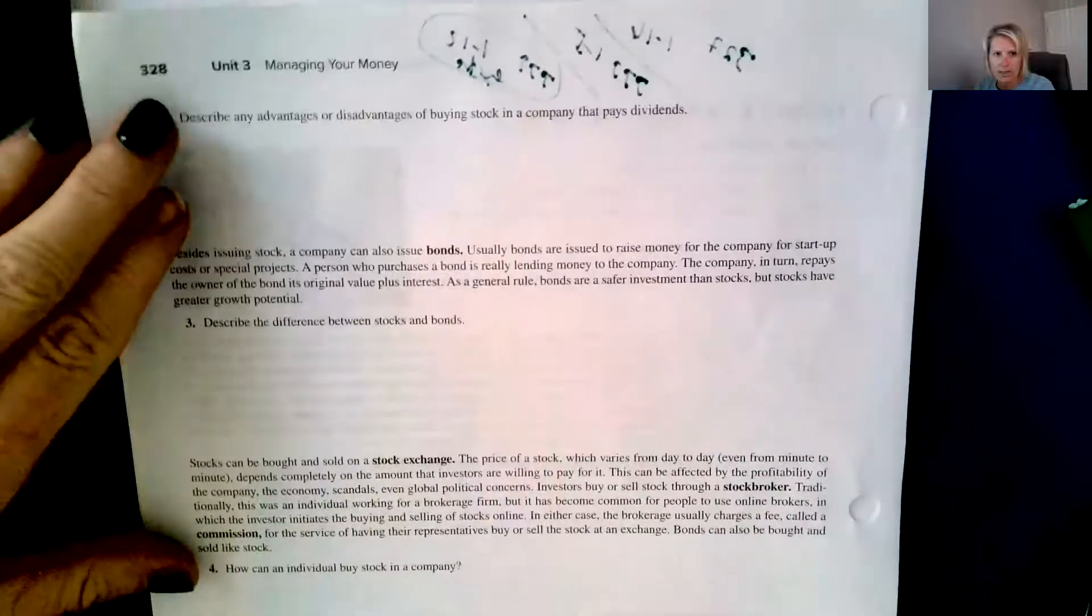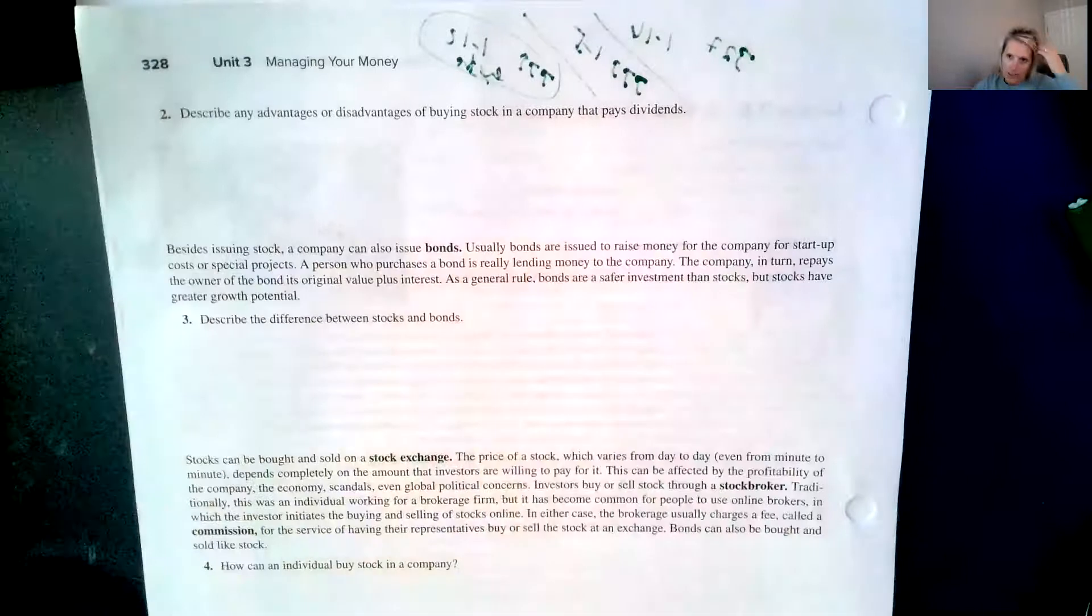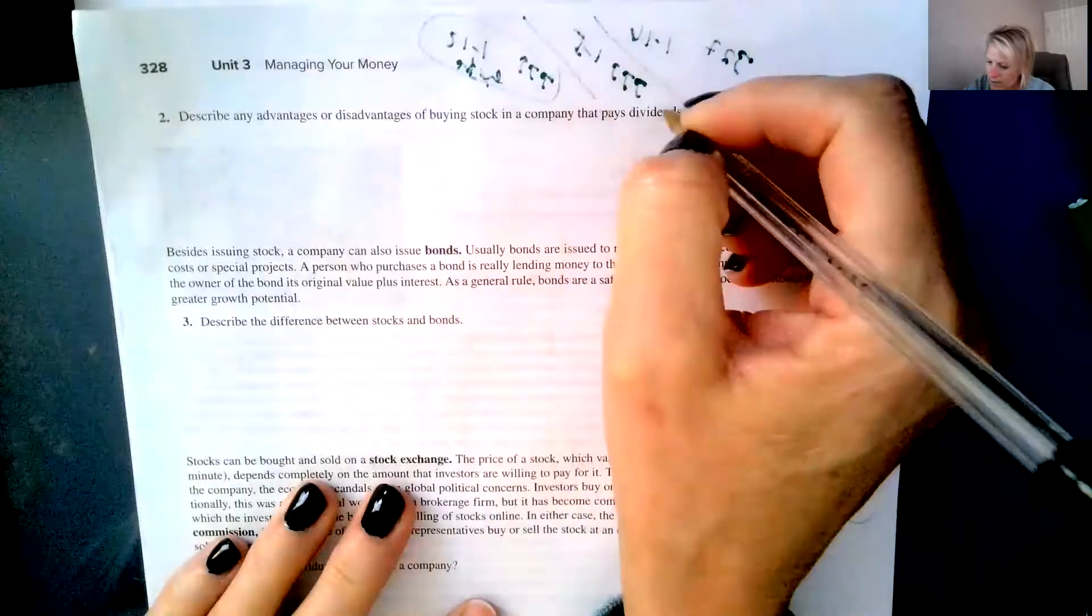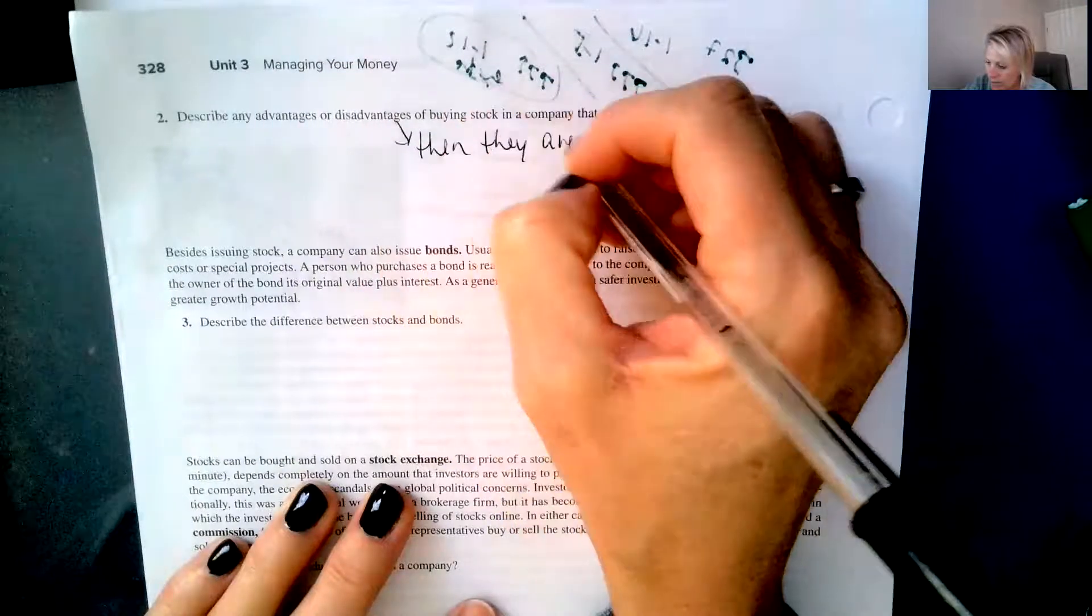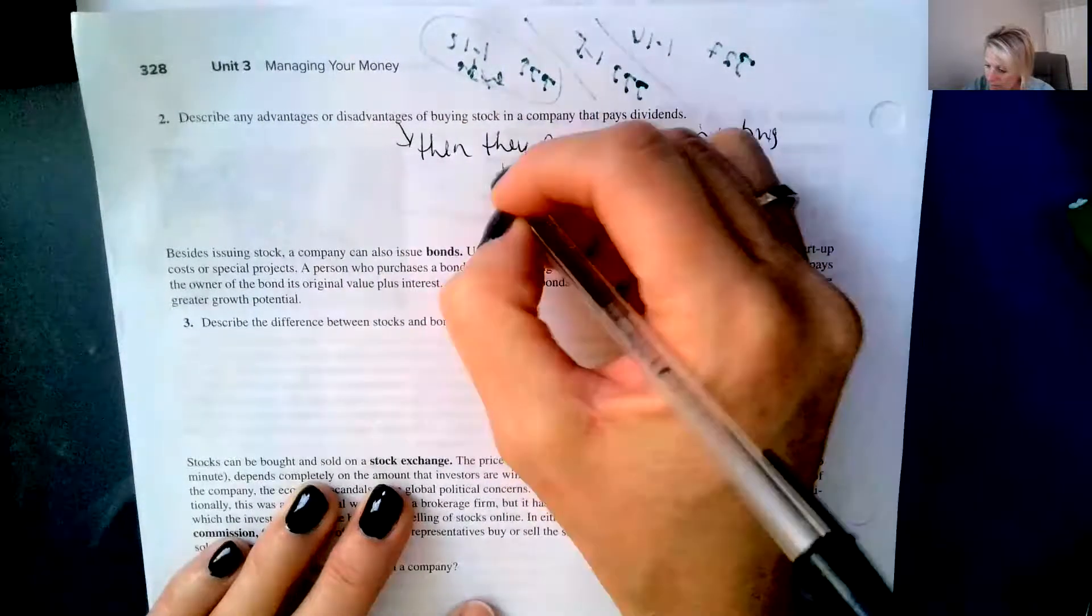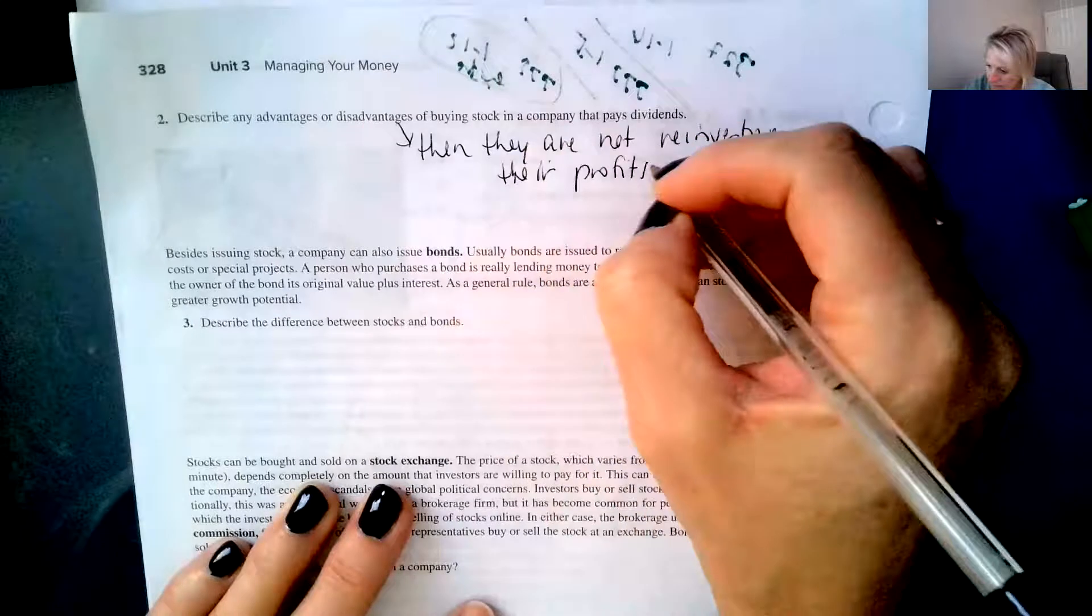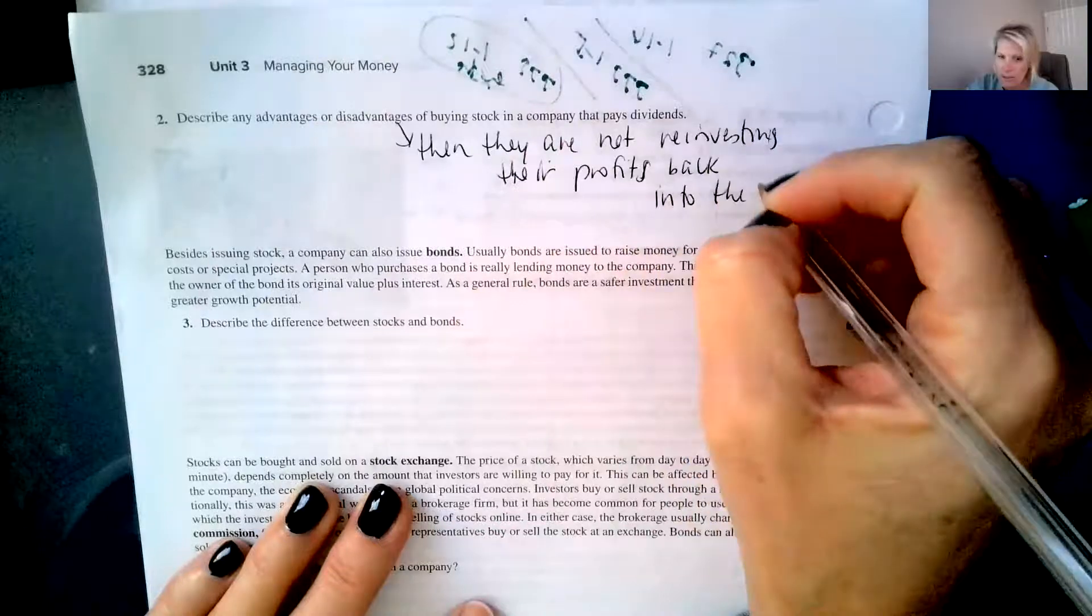So number two says describe the advantages or disadvantages of buying stock in a company that pays dividends. So an advantage would be that they're paying you money off the profits, right? A disadvantage may be if they're paying dividends, then they are not reinvesting their profits into the company. So they're paying you dividends. That could be one disadvantage.